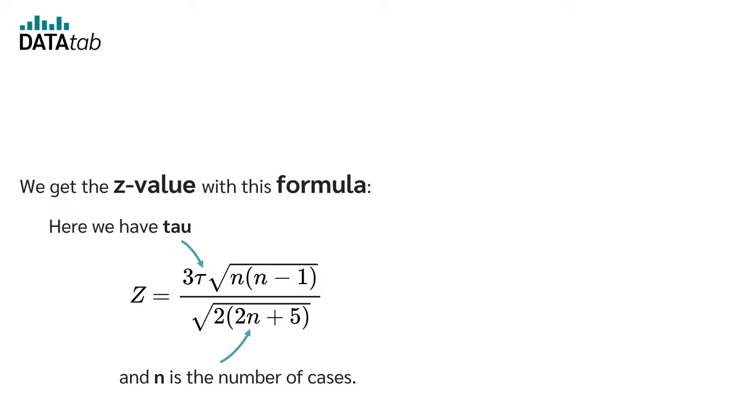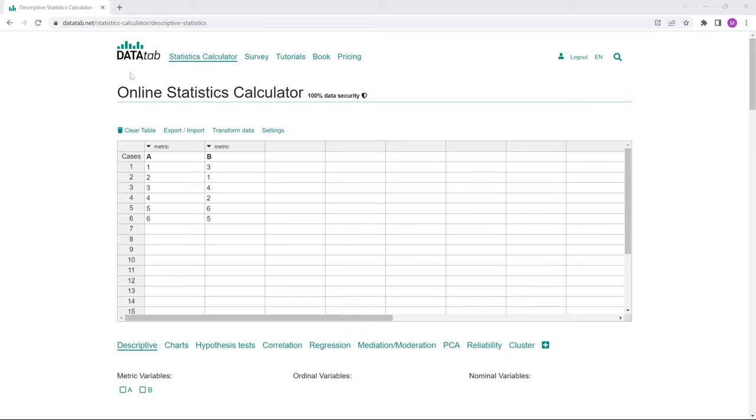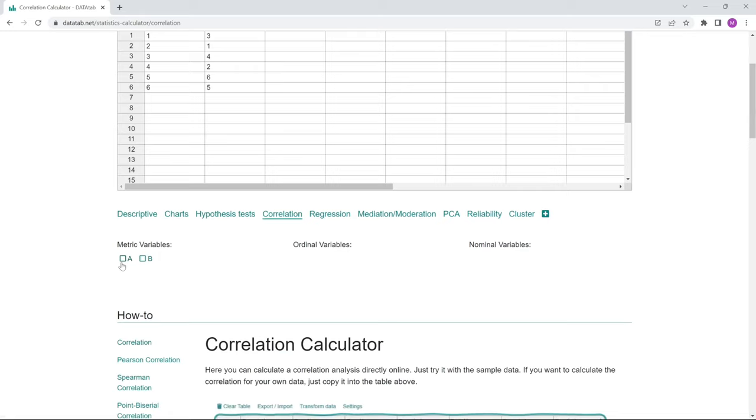And now, I will show you how to calculate Kendall's Tau online with DataTab. To do this, simply copy your own data into this table and click on correlation. Then, you select the desired variables for which you want to calculate Kendall's Tau.